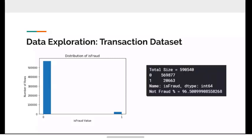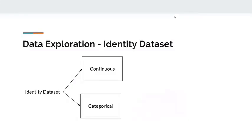Initial data exploration showed that there is an imbalance in the transaction dataset, with 96.5% of the data being non-fraudulent and only 3.5% being fraudulent. My name is Tsiming. Next, I will be talking more about data exploration and pre-processing strategy.